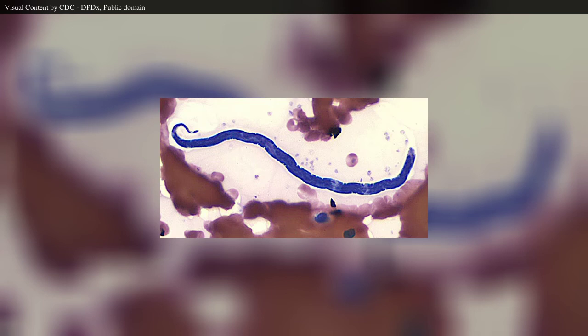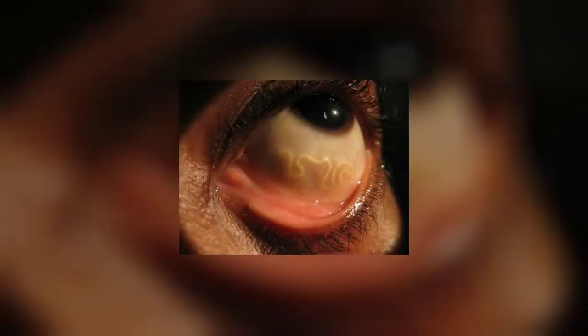Loa loa parasites are located in West and Central Africa, and about 14.4 million people live in these areas of high infection. In terms of presentation, most people are asymptomatic; however, calabar swellings can develop anywhere on the individual's body and last one to three days. Additionally, worms can also roam subconjunctivally across the eyes.